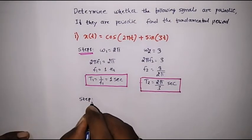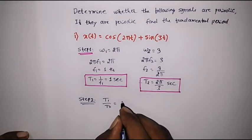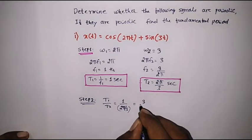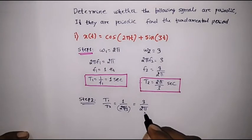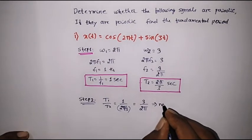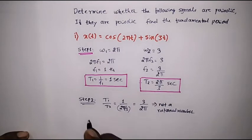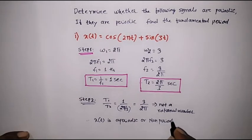In step 2, we are supposed to find the ratio T1/T2, which is equal to 1 divided by (2π/3), which we can write as 3/(2π). Here we can observe that this number is not an integer and not a rational number. Therefore, the given signal x(t) is a non-periodic signal.